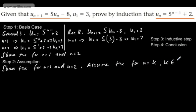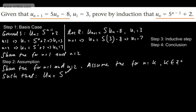We assume — and assume is the key word — assume true for n equal to k, where k is a positive integer such that u_k equals 5 to the power of k minus 1 plus 2. That's our assumption. We've shown it's true for n equals 1 and n equals 2, and now assume these two things are equal when n equals k.